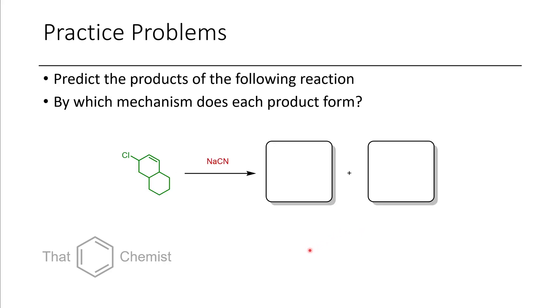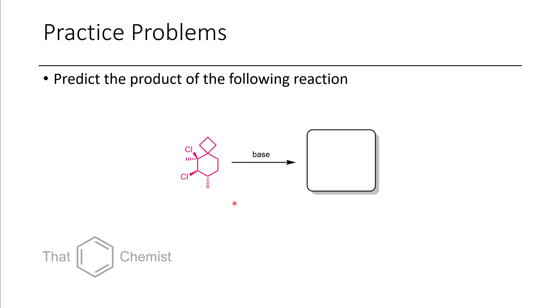For practice for next lecture, I'd like to assign two problems. First, with this chloride, show which products would form when treated with sodium cyanide and elaborate on what mechanism they form through. Additionally, predict the product of the following reaction: we have this dichloride treated with a base—what would be the product? Hopefully this has been helpful for finishing off E2 and SN2 reactions. Next lecture we'll start getting into SN1 and E1 reactions. If you have any comments or questions, please leave them below and I'd be happy to receive any criticism about this series. Thank you.